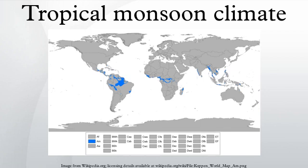Unlike tropical savannah climates, however, a tropical monsoon climate's driest month sees less than 60 millimetres of precipitation but more than a defined threshold. A tropical monsoon climate also tends to see less variance in temperatures during the course of the year than a tropical savannah climate. This climate has a driest month which nearly always occurs at or soon after the winter solstice for that side of the equator.